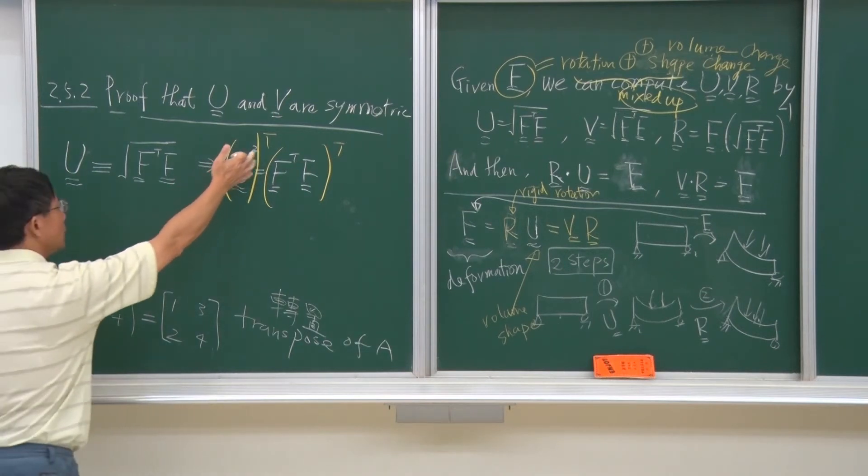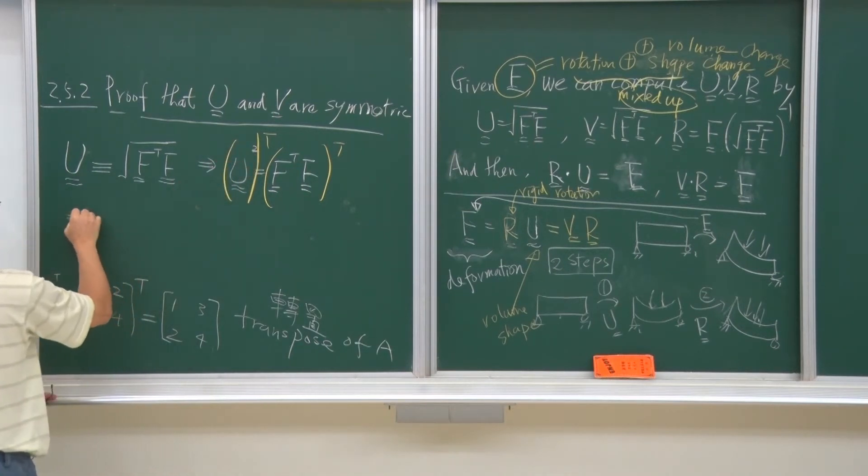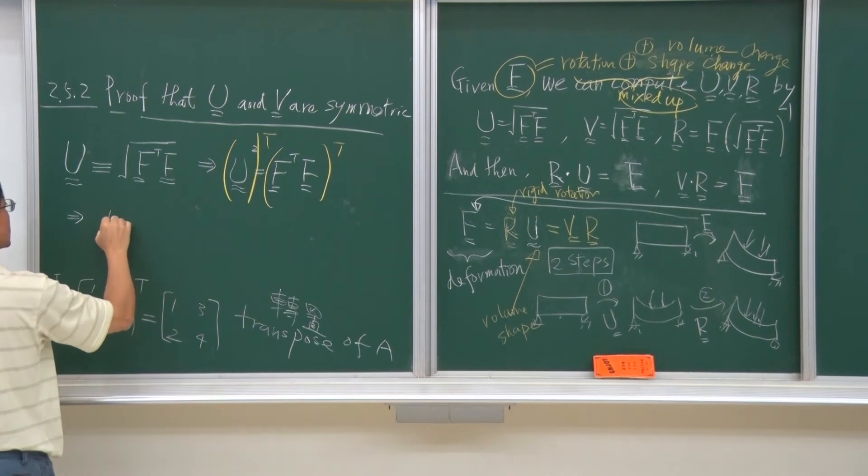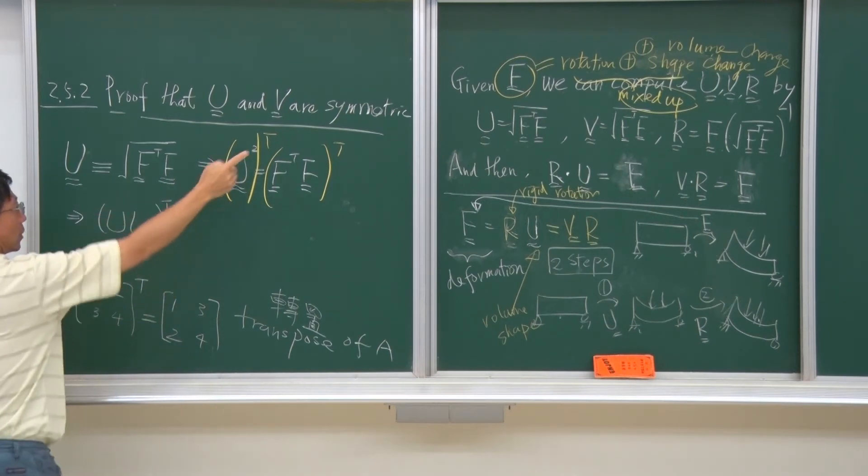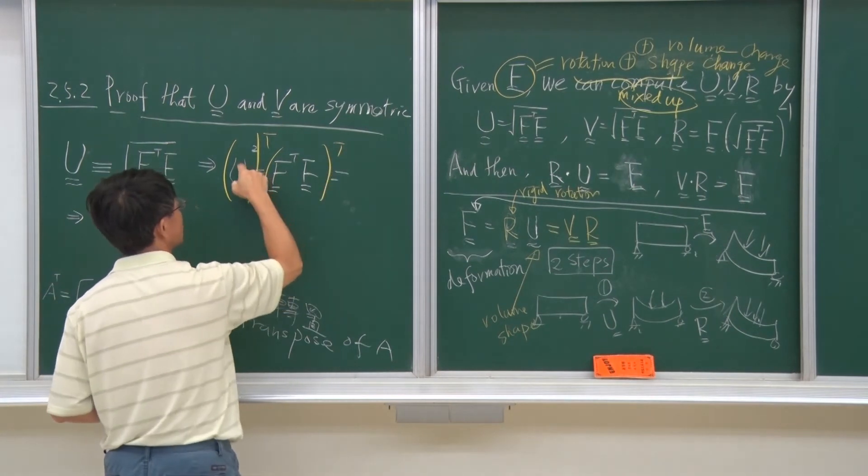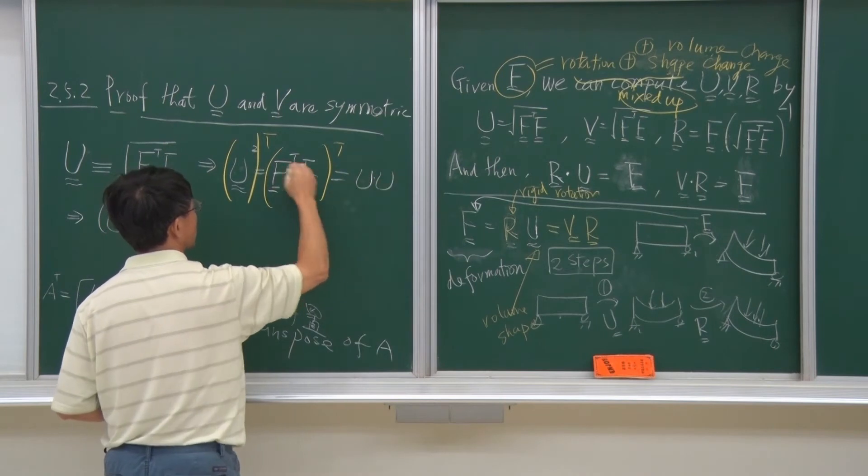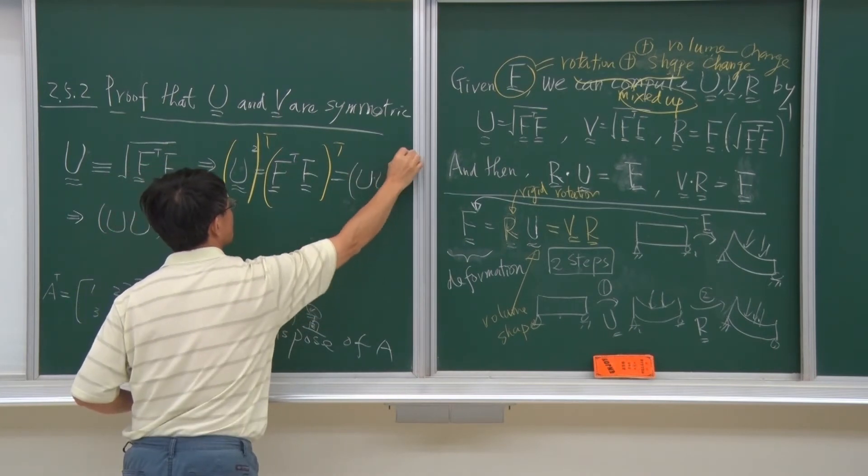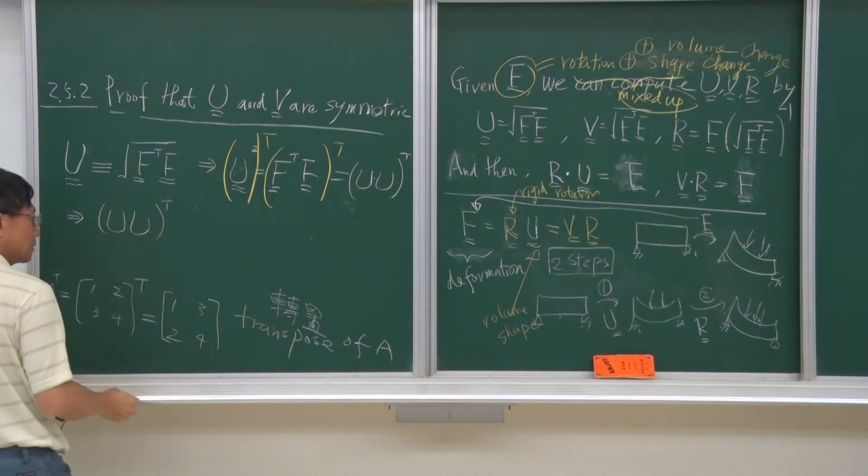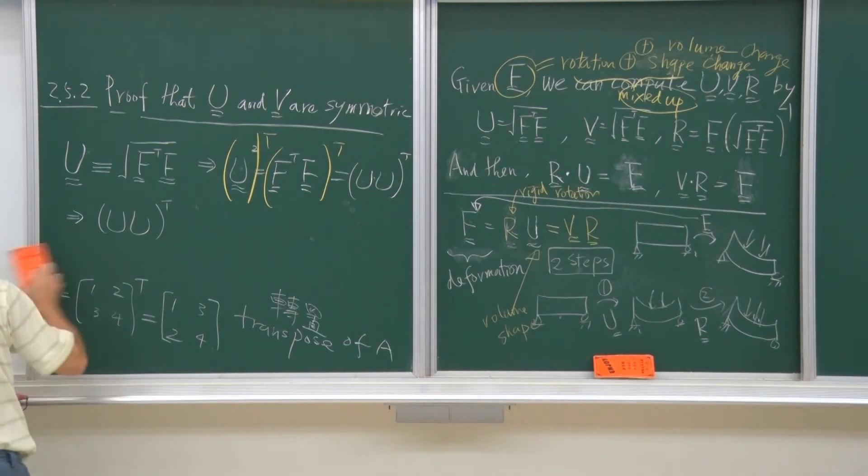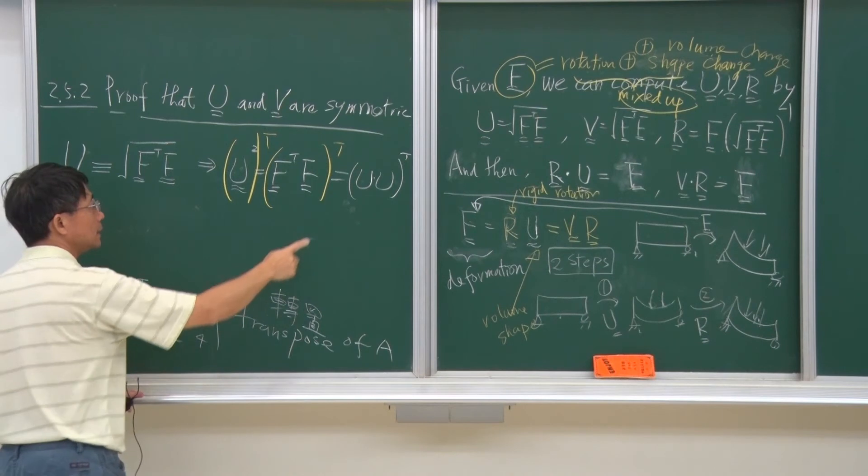So once we have the transpose, just right here, because U square, U time U is U square. So transpose, transpose, and then, and then, this one will become Ft.